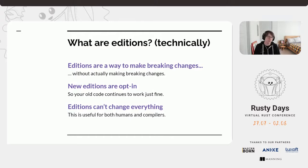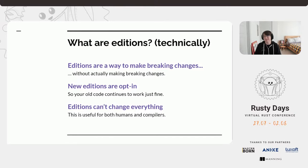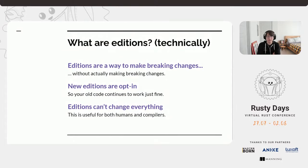Editions are not purely a social mechanism — they're also a technical mechanism. On a technical level, editions are a way to make breaking changes to the Rust language without actually making breaking changes. Editions are opt-in: you declare what edition your code is in, and if you don't update, new breaking changes don't affect you. Your code still works forever. This is very different from something like Python 2 to Python 3.